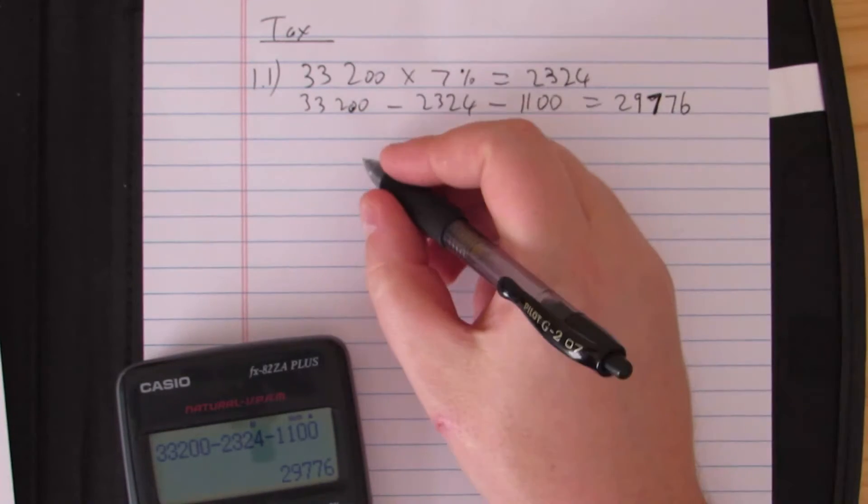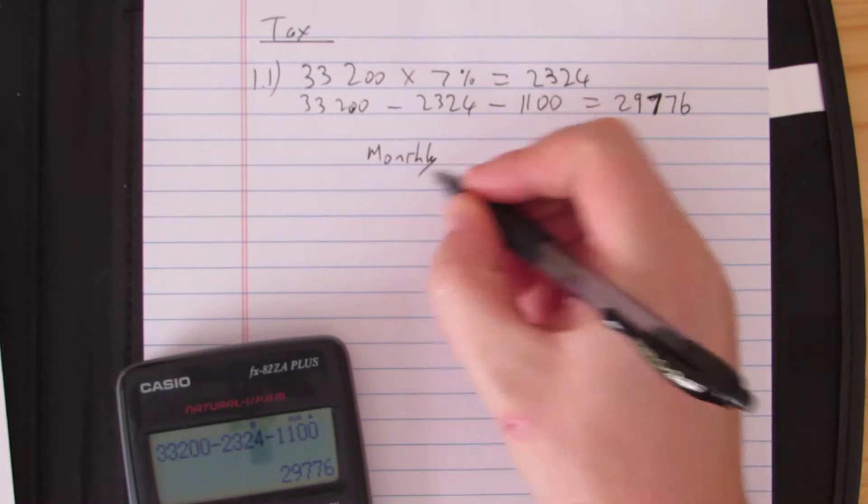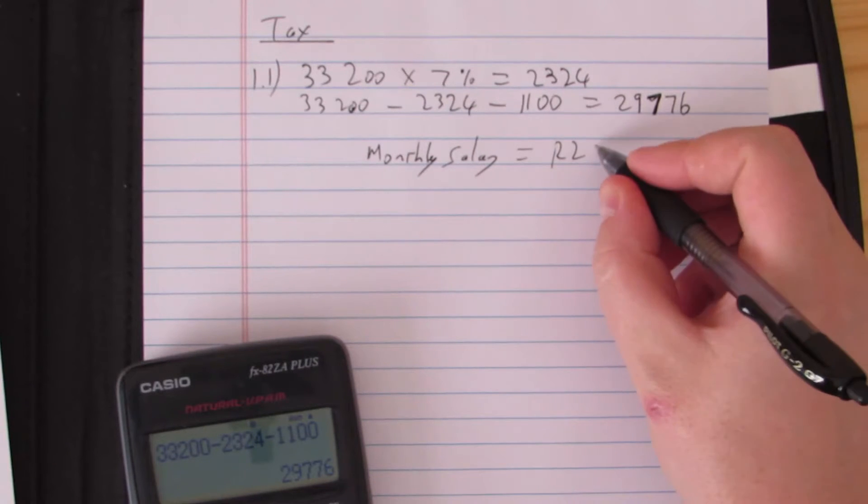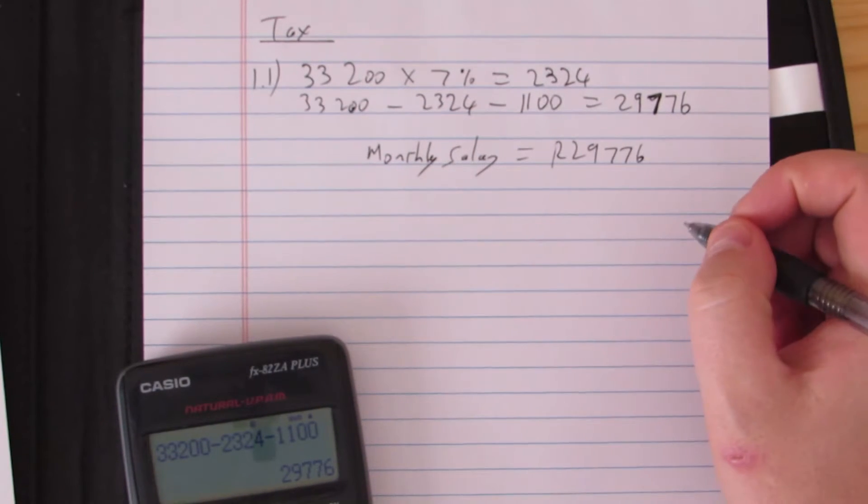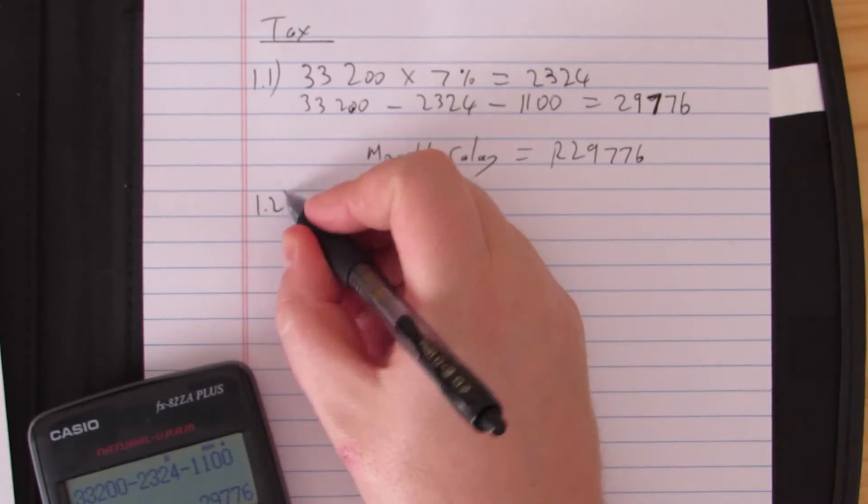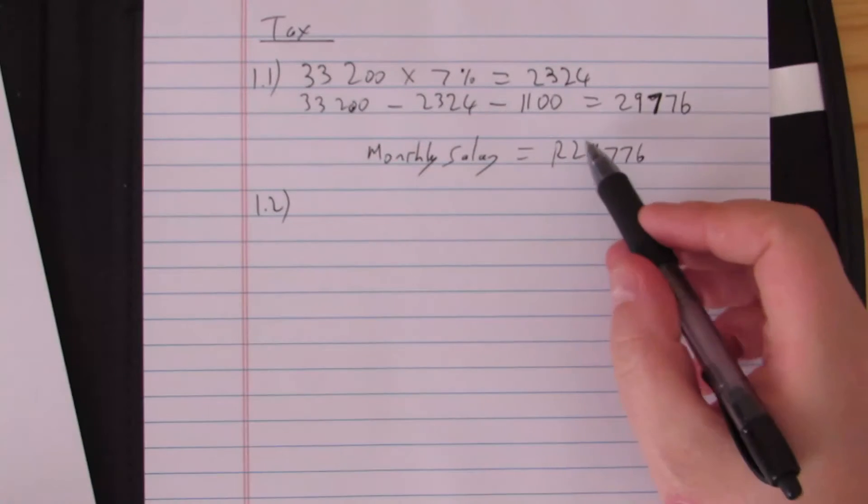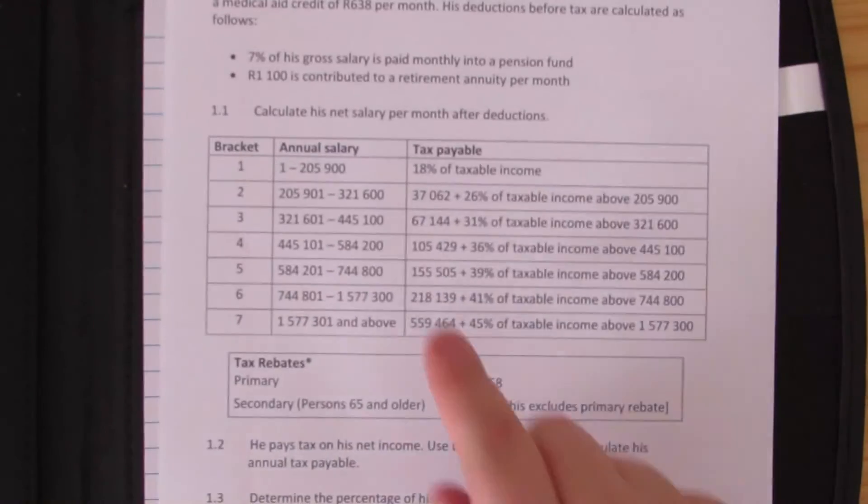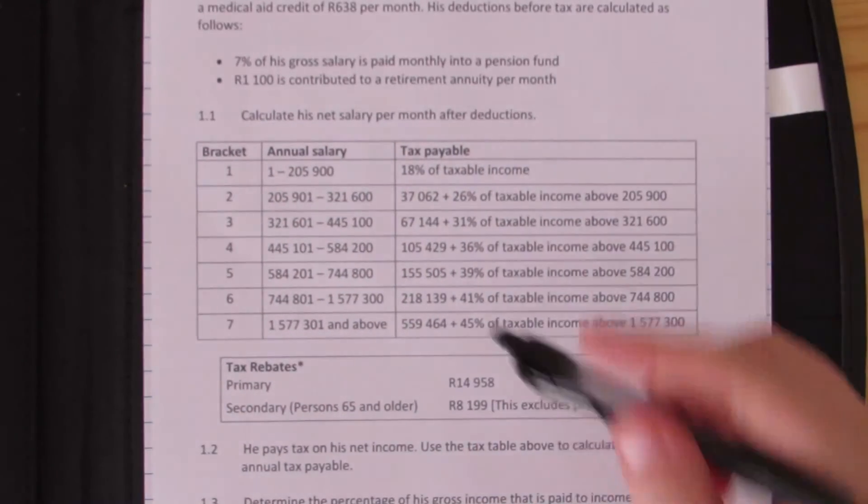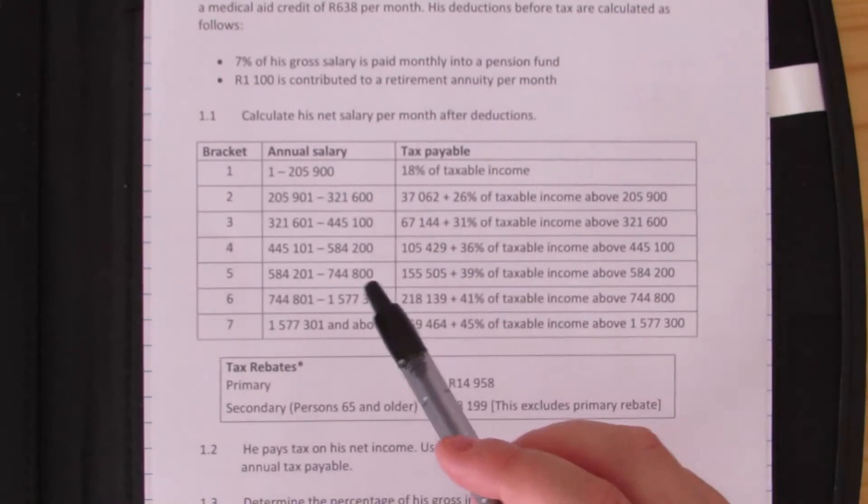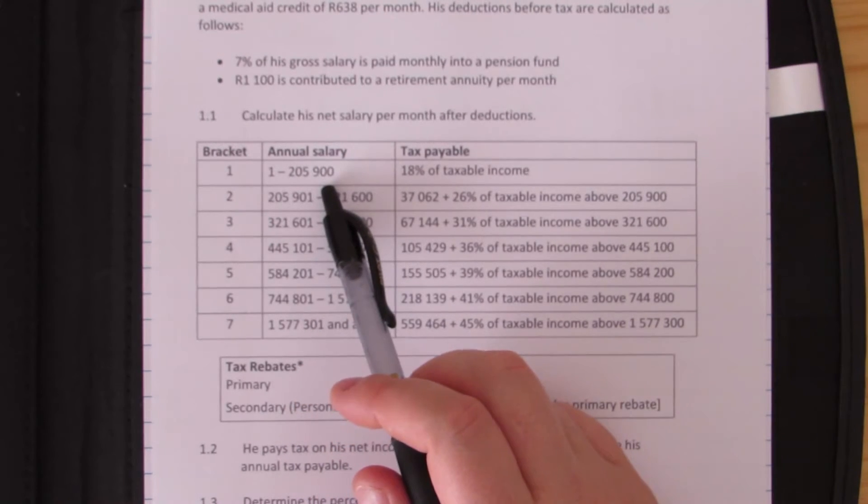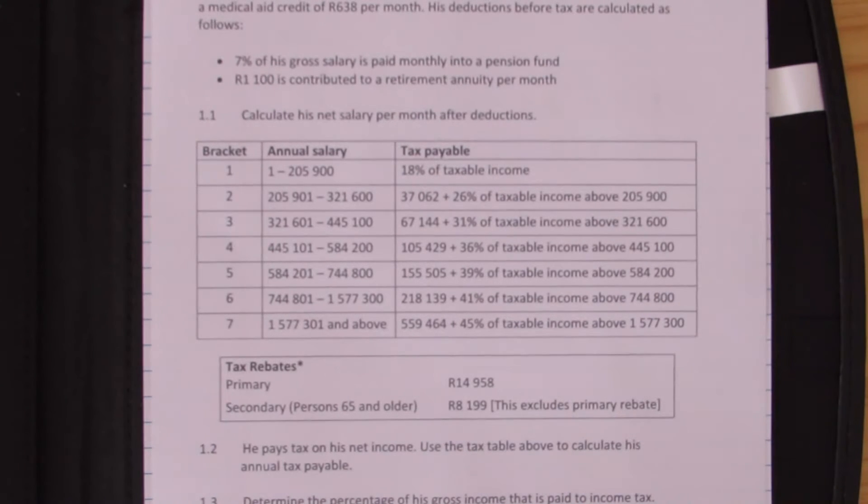Yes, that is his monthly salary. Monthly salary is equal to 29,776 after deductions. Very good. Moving on to 1.2, now we need to take his monthly salary, his taxable income basically, and transfer it to this tax table.